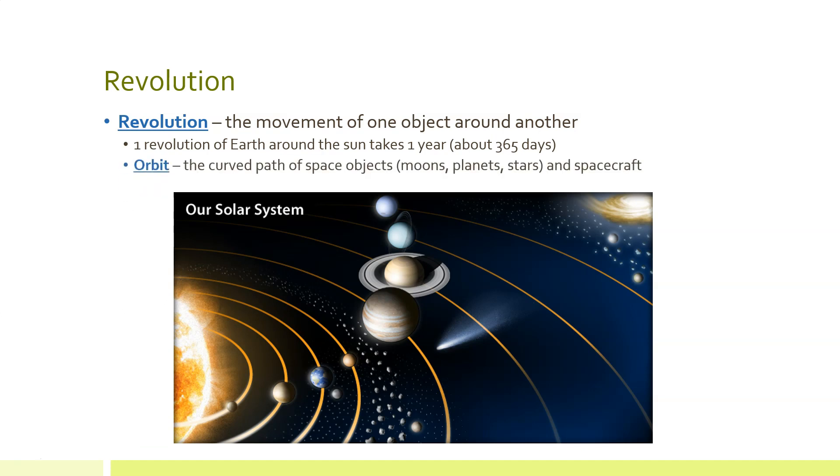Earth's path or orbit is a slightly elongated circle or ellipse. It is almost a perfect circle, but it is actually an oval. Earth's orbit brings the planet closest to the sun in January and furthest from the sun in June.